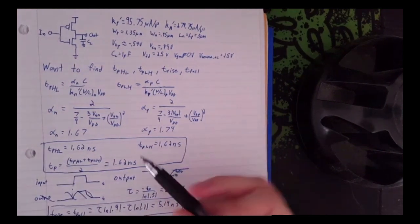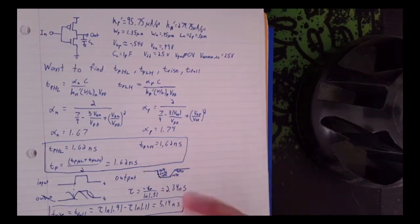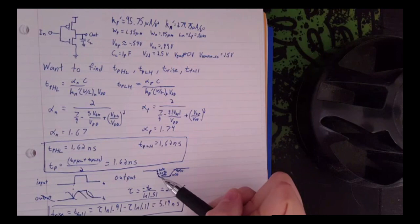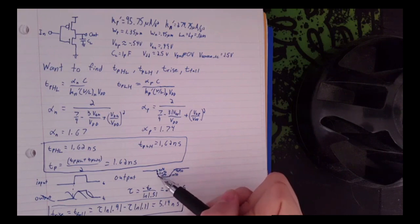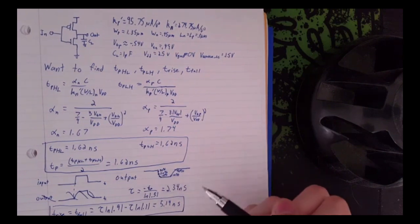As you can see, our rise and fall times are actually quite a bit more than our delay times. And that's because exponential functions are slower and slower the closer they get to their final value. So to go from 90% to 10% actually takes quite a bit longer than just go from 100% to 50%. And the same for the rise time.